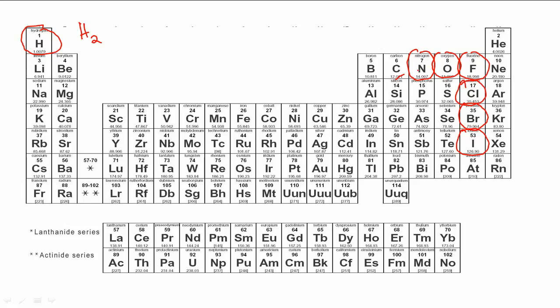There are seven of them, and notice how this kind of forms a seven on the periodic table. The halogens — some of the four halogens we have here — along with nitrogen N2 and O2, which both exist as two atoms.